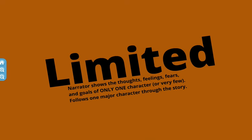Then we have limited. This would be when the narrator shows the thoughts, feelings, fears, and goals for only one character — sometimes a few characters, but very few. They're limited to only knowing about those certain characters. For example, sometimes you're going to follow one major character through the story, and we will know what they're thinking and how they're feeling, but only that character. We won't know about everybody else.